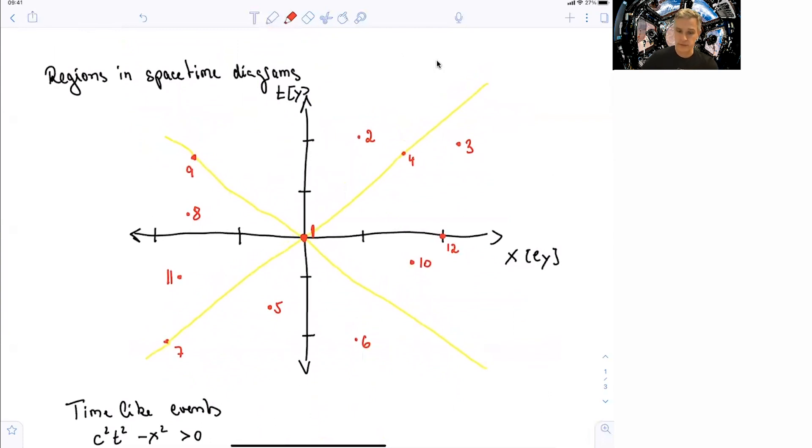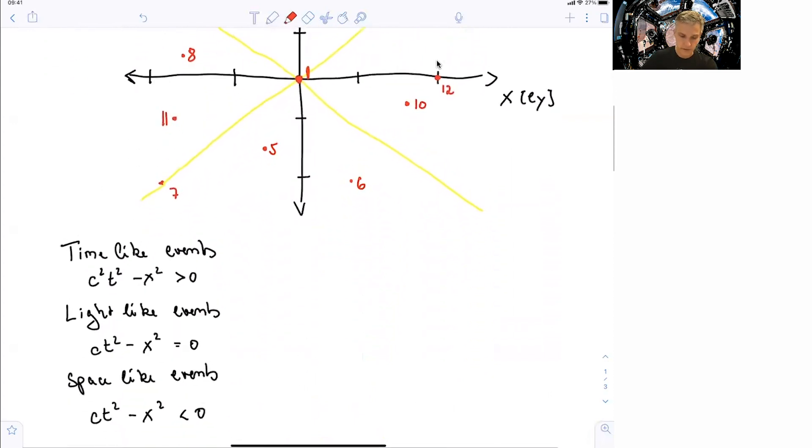So in this space-time diagram, again, I drew light worldlines, or worldlines for light, in yellow. And I plotted a total of 12 different events. And now we want to characterize those events. And we want to characterize them based on whether or not they are time-like, light-like, or space-like.